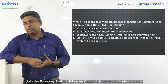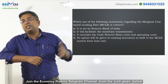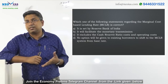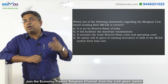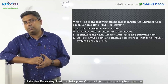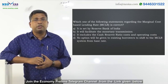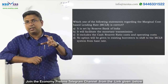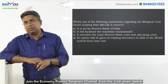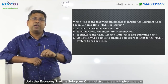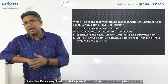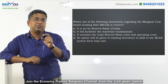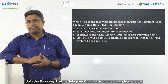Before MCLR, when the base rate system was there — the predecessor of MCLR was the base rate system — the repo rate was not considered by the bank while calculating its cost of funds. But in MCLR, it has been made mandatory that even the repo rate, as well as where the bank borrows money, as well as the deposit funds, need to be taken into consideration. That is why the term is called marginal cost.